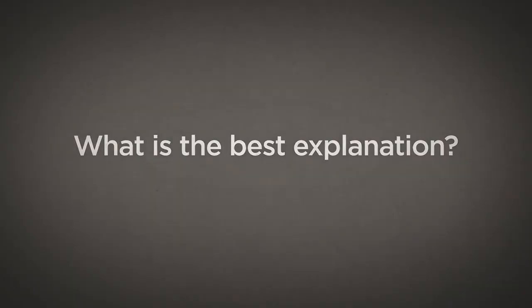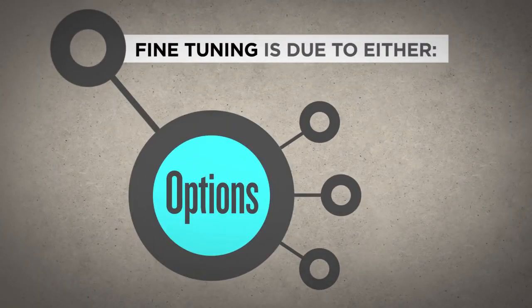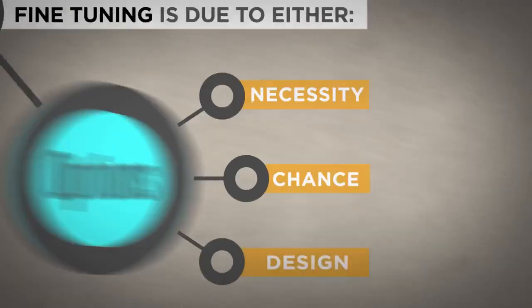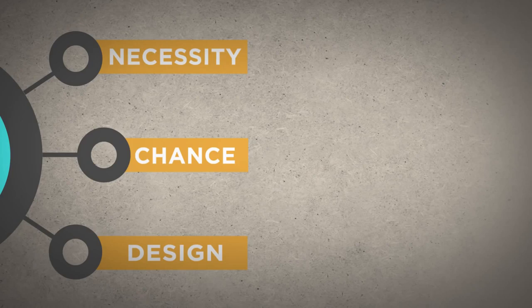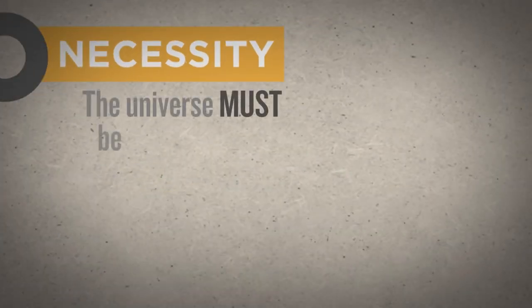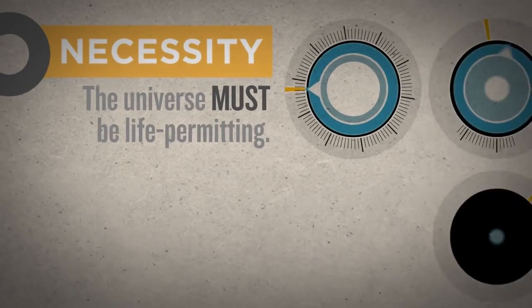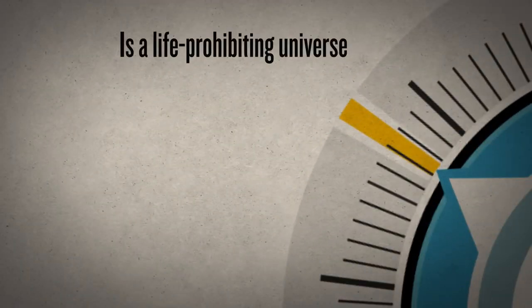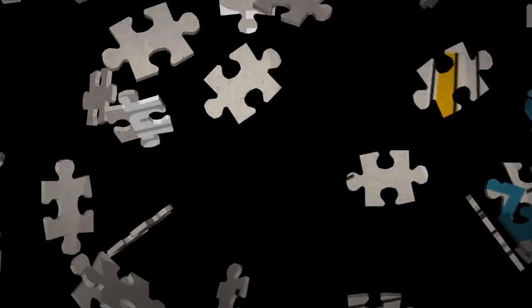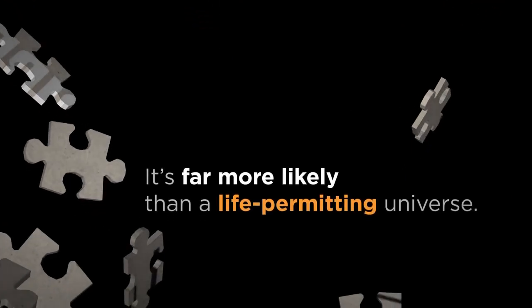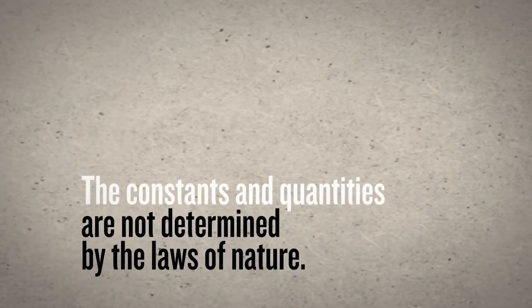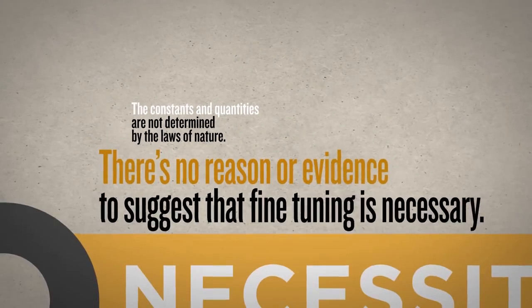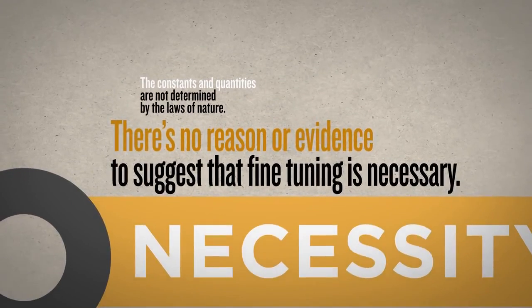What is the best explanation for this astounding phenomenon? There are three live options. The fine-tuning of the universe is due to either physical necessity, chance, or design. According to the first alternative, the universe must be life-permitting — the precise values of these constants and quantities could not be otherwise. But is this plausible? Is a life-prohibiting universe impossible? Far from it. It's not only possible, it's far more likely than a life-permitting universe. The constants and quantities are not determined by the laws of nature, and there's no reason or evidence to suggest that fine-tuning is necessary.